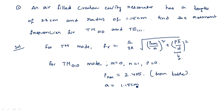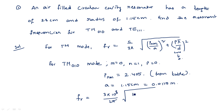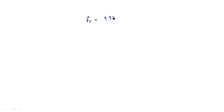The value of A is 1.15 centimeters, which converts to 0.0115 meters. The resonant frequency f_R = (3 × 10⁸) / (2π) × √[(2.405 / 0.0115)²]. After simplification, f_R = 9.98 GHz for the TM010 mode.